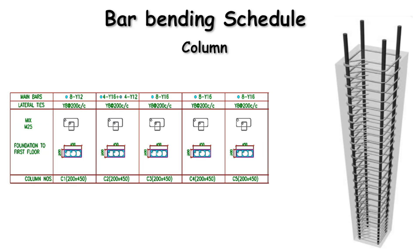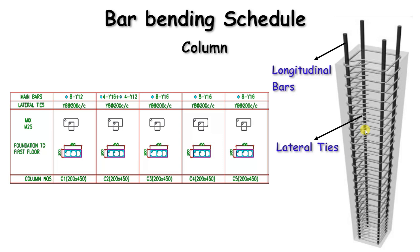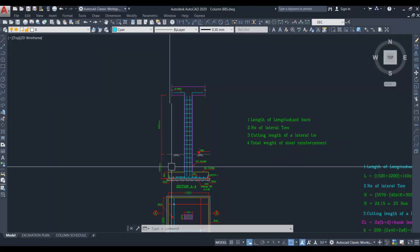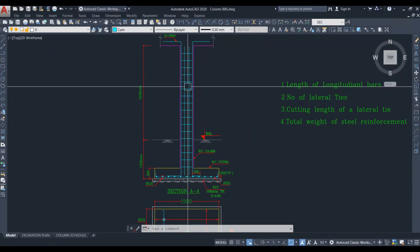We have two types of reinforcement. One is the main bar and another one is the lateral ties. The main bars or longitudinal bars are provided around the column in order to resist the axial load coming on the column. The lateral ties or transverse reinforcement are used to tie the longitudinal bars in position and also help resist shear force and lateral loads.